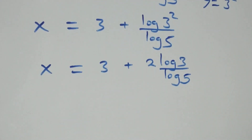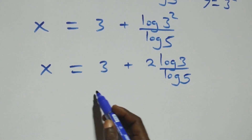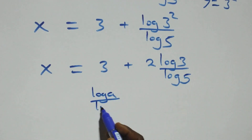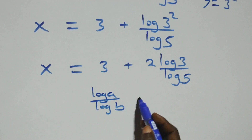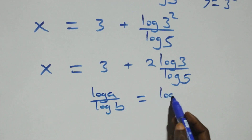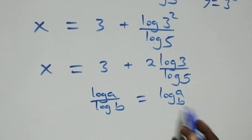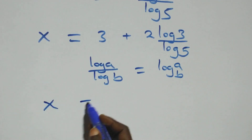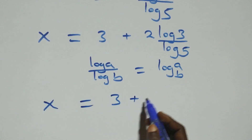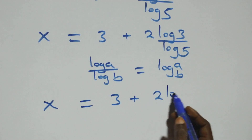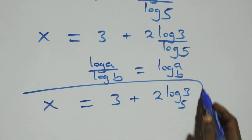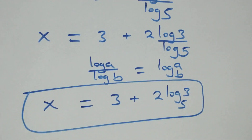From here we apply the change of base rule: when we have log a over log b, this is the same thing as log a to base b. So what we have here becomes x equals to 3 plus 2 log 3 base 5. Therefore the value of x is 3 plus 2 log₅3.